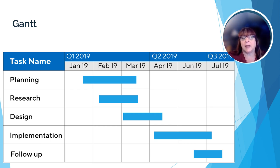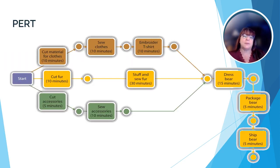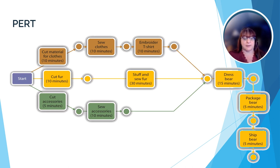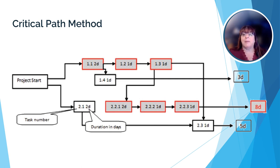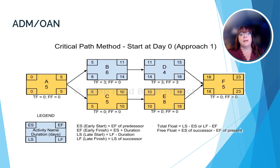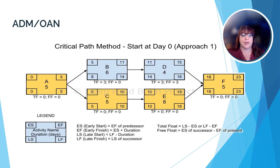The PERT Chart was developed as an enhancement to the Gantt Chart and uses nodes to show the tasks of the project and what tasks are directly related to other tasks. The Critical Path Method takes the PERT Chart a little bit further and identifies tasks that must be completed before others can be started. Following the path for those tasks makes it the critical path. The ADM or OAN Chart takes the PERT Chart and the Critical Path Methods a bit further still by showing the impact on the project should one or more tasks be completed early or late.